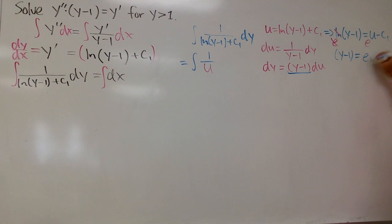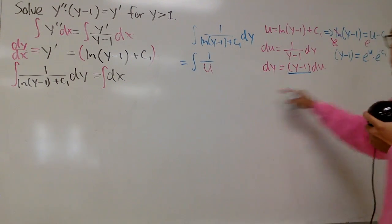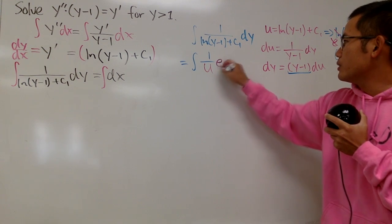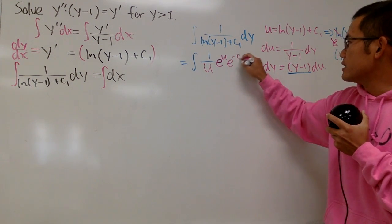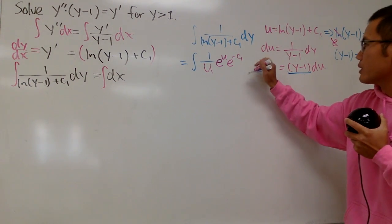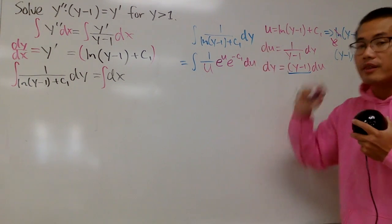e to the u times e to the negative c1, right? Negative c1, technically. So now, we can just put this right here, so I'll put this down right here for you guys. y-1, which is the same as this, I will just write it down as e to the u, and then e to the negative c1. And we have this in the u world, so let's put on the du right here.